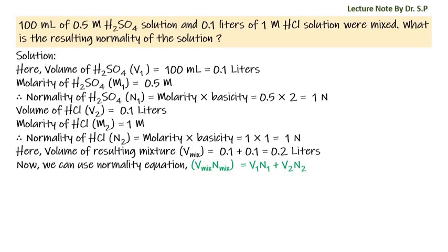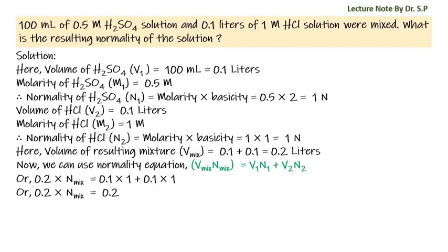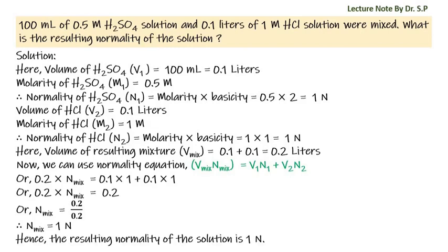Here both solutions are acids — sulfuric acid and hydrochloric acid — so we add their normality and volume. Therefore: 0.2 × N_mixture = 0.1 × 1 + 0.1 × 1, which gives 0.2 × N_mixture = 0.2, so N_mixture = 0.2 / 0.2. Therefore N_mixture equals 1N. Hence the resulting normality of the solution is 1N.